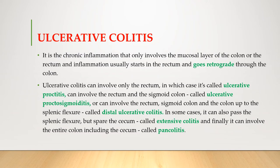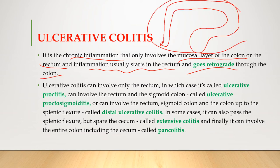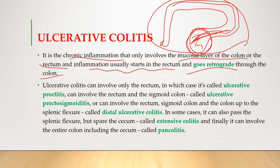Now let us study ulcerative colitis. It is a chronic inflammation that only involves the mucosal layer of the colon or rectum. Inflammation usually starts in the rectum and then travels retrograde through the colon — from the rectum through the sigmoid colon, then the descending colon, then the transverse and ascending colon, and so on.